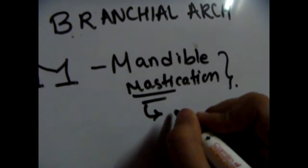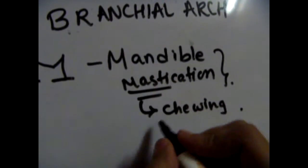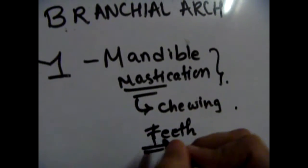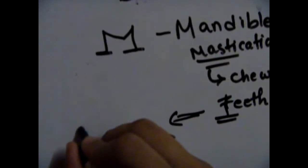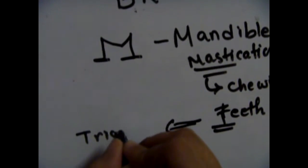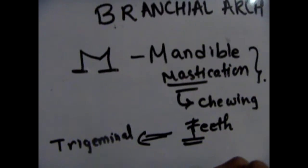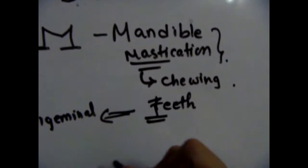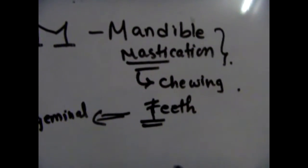It's easy to remember anything that comes with M. These muscles of mastication are associated with chewing, and you chew with your teeth, right? So the T helps us remember that the trigeminal nerve is the nerve for the first branchial arch.